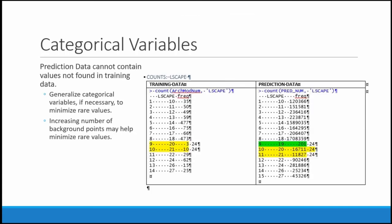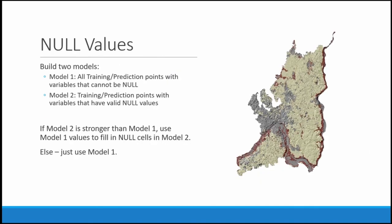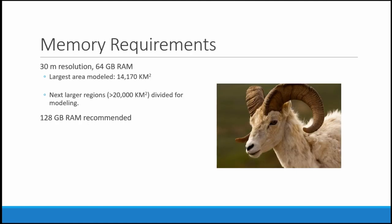Some insights: categorical variables can cause problems, particularly if you have rare values. We have procedures for dealing with them. We also had a problem with null values — our soils data has missing values in certain areas such as urban areas, mining areas, and disturbed areas. So we ended up doing two models: one without soils data and one with soils data, and we use the one without soils data to fill in those null areas. Memory requirements were considerable — it worked a lot better with 128 gigabytes of RAM than with 64 gigabytes, which is what I have on my computer. With 64 gigabytes I could not run some of the regions without splitting them up.